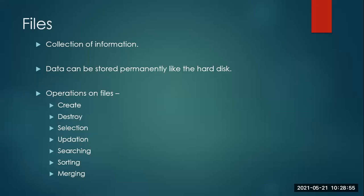Even if you switch off your computer or turn the power off, the data is still present in the non-volatile memory — the secondary memory. So which stores data permanently? Secondary memory, yes. Hard disk is an example of secondary memory. So the definition: a file is a collection of information and that data is going to be stored permanently on the hard disk.